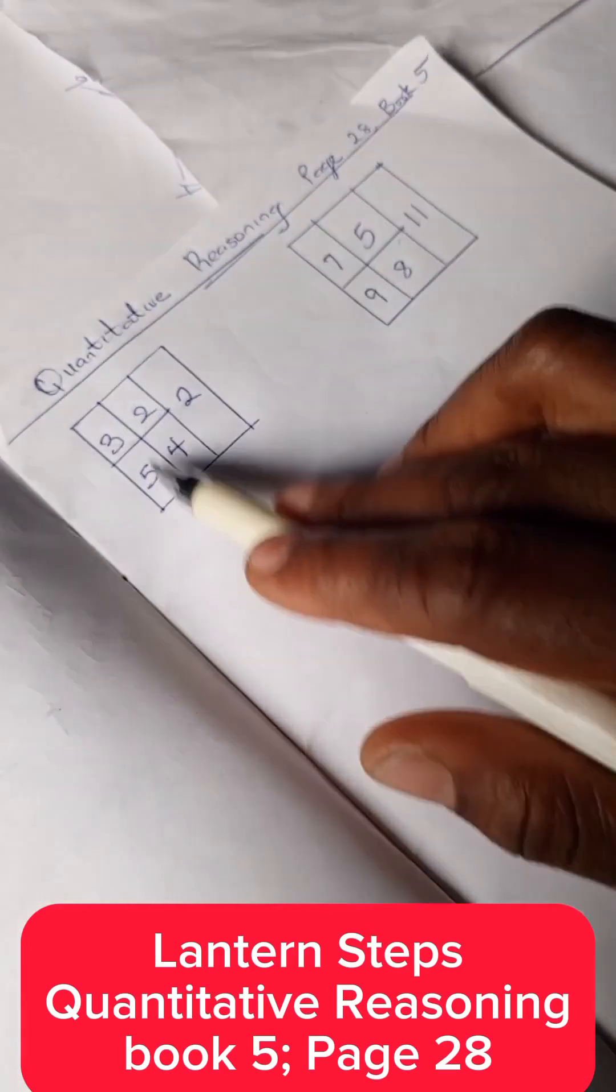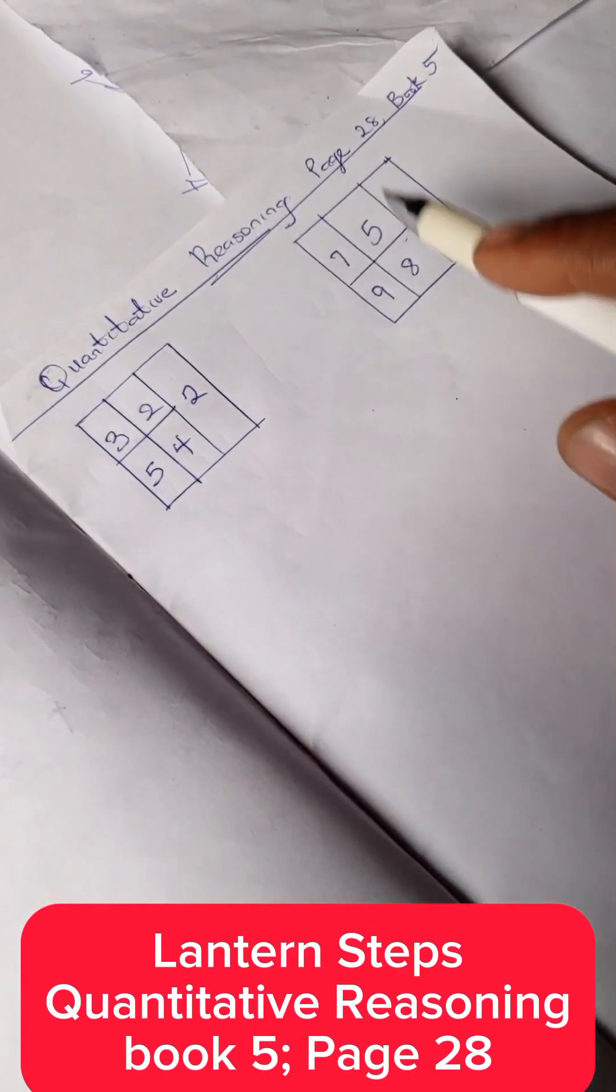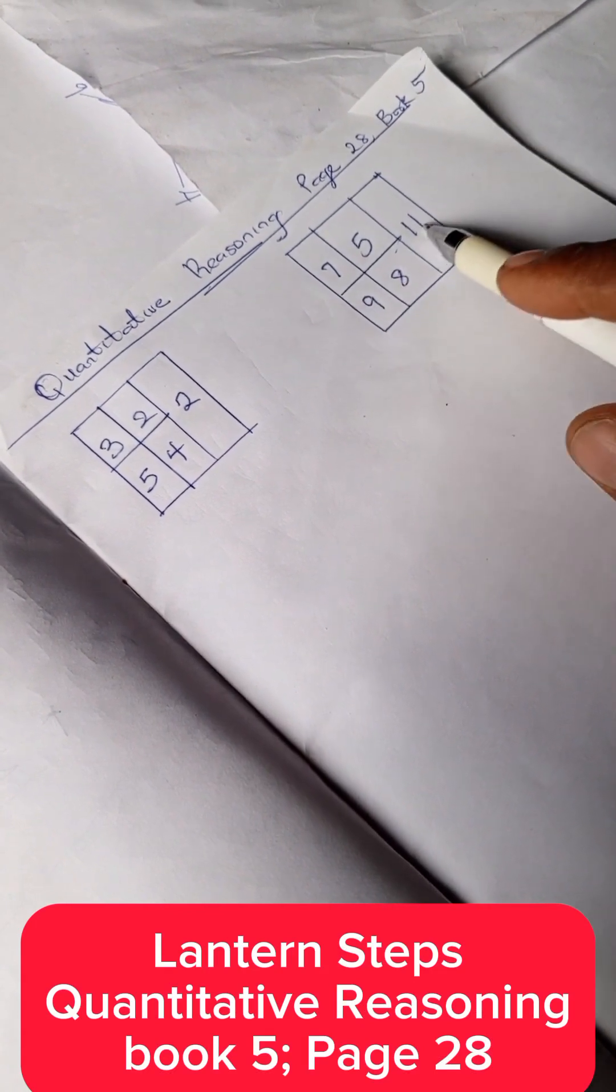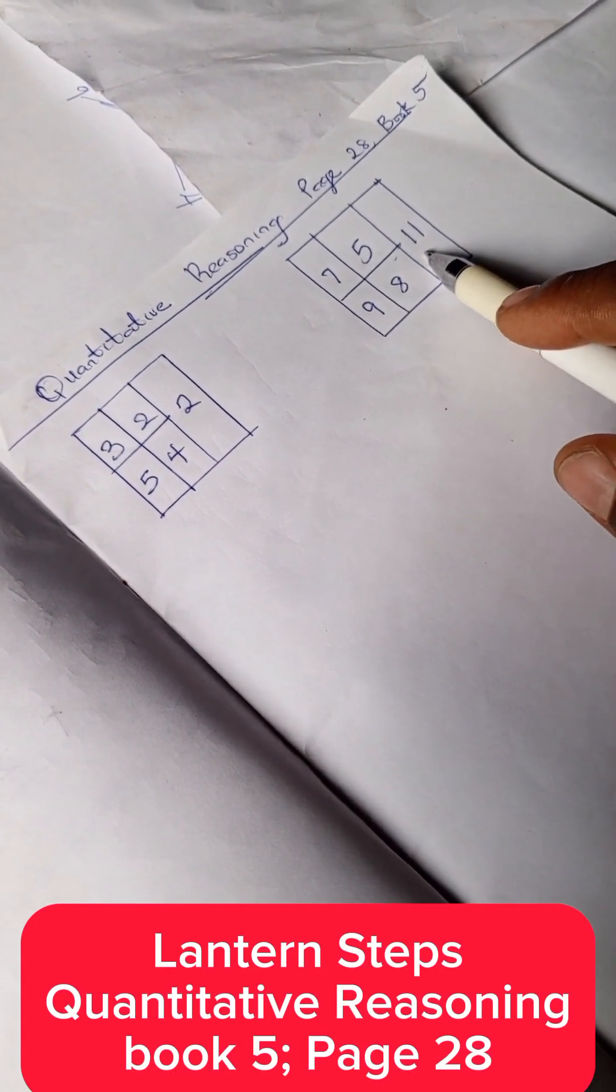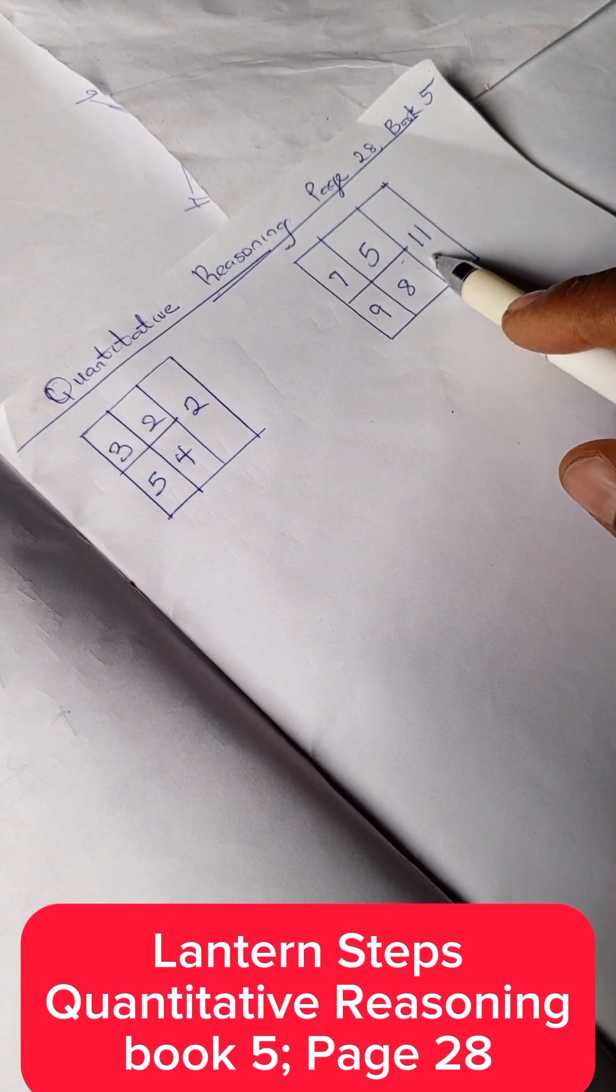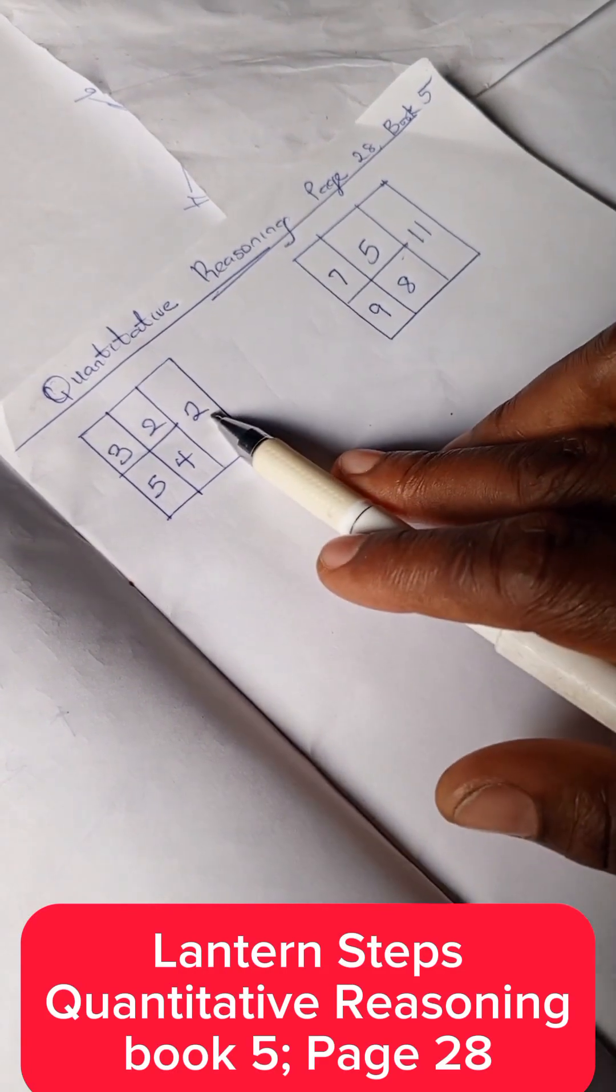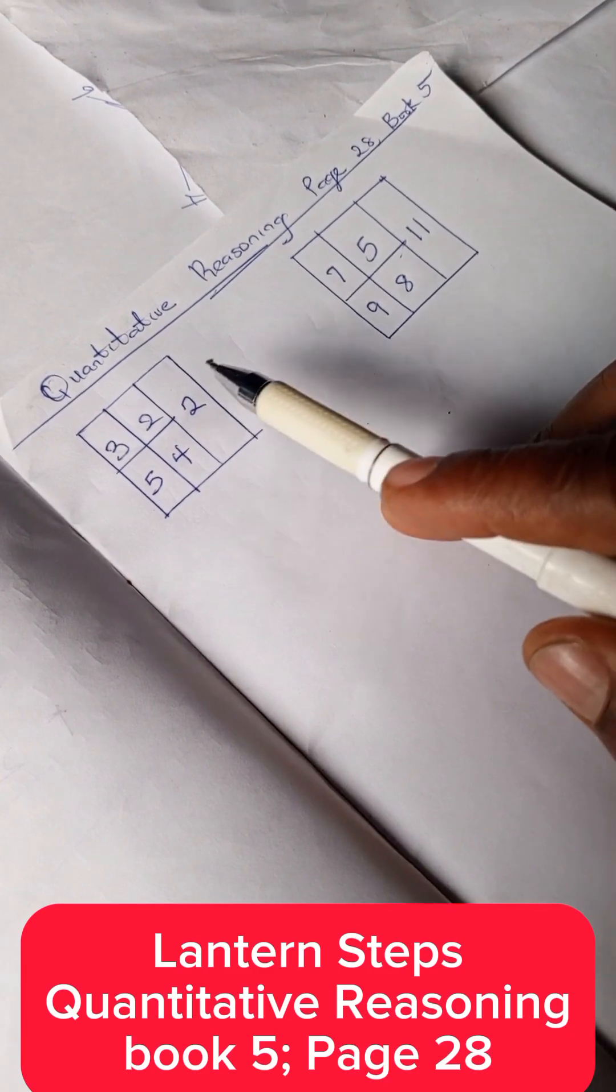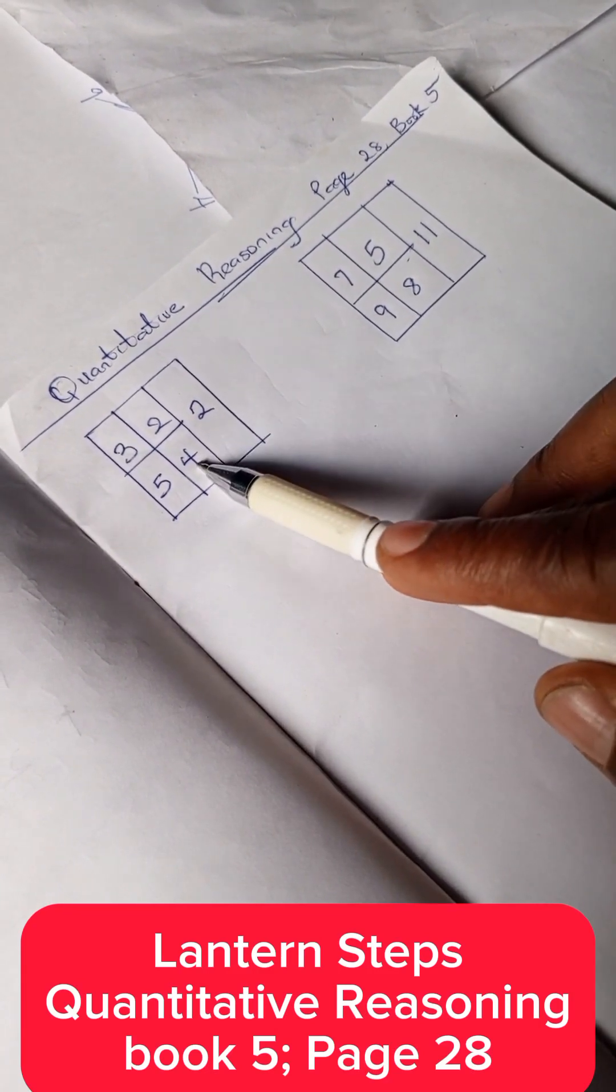We have 3, 2, 5, 4, and 2 here. We have 7, 5, 9, 8, and 11. Looking at this, assuming we want to get 2, we can see 4...